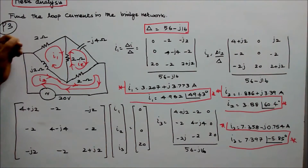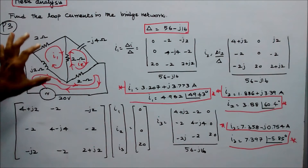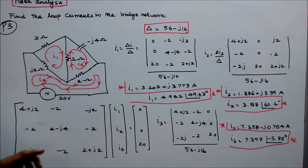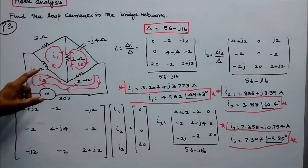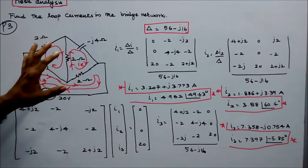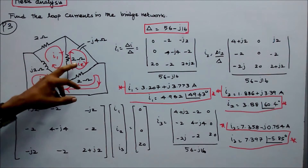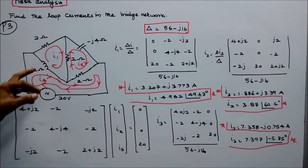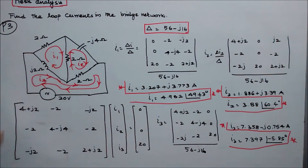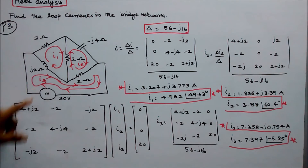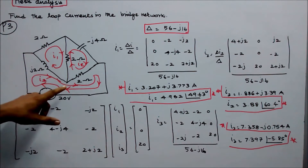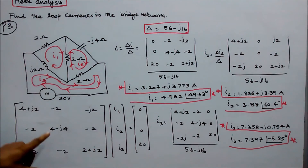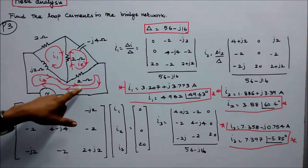Problem number three: Find the loop currents in the bridge network. The bridge network consists of three resistors (2 ohm, 2 ohm, 2 ohm), one inductive reactance j2 ohm, and one capacitive reactance minus j4 ohms. There are three loops with clockwise loop currents i1, i2, and i3. The diagonal elements are: loop 1 = 2 + 2 = 4 + j2, loop 2 = 2 + 2 minus j2 minus j4 = 4 minus j4 (error: should be 4 minus j6, but stated as 4 minus j4), loop 3 = 2 + j2.